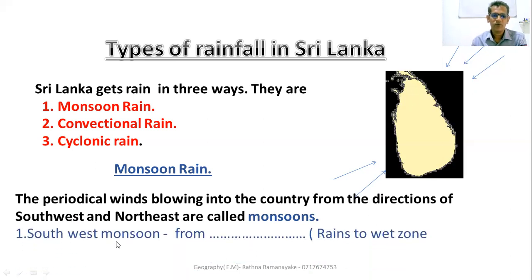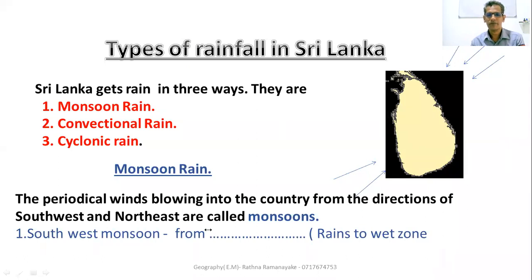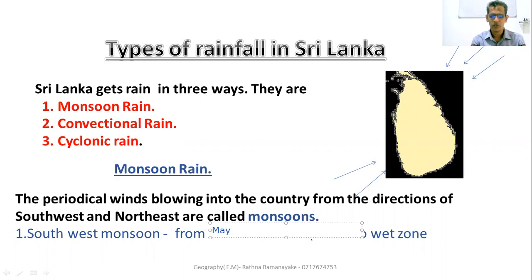South-west monsoon. Sri Lanka gets rain from the south-west monsoon from May to September — that means May, June, July, August, September.